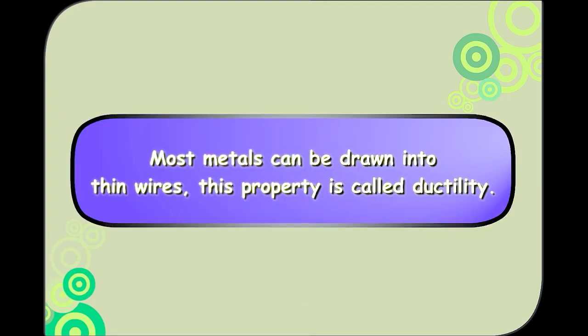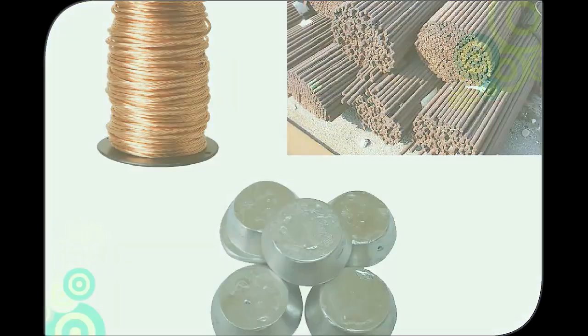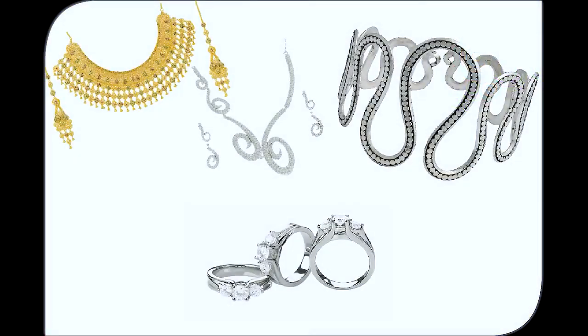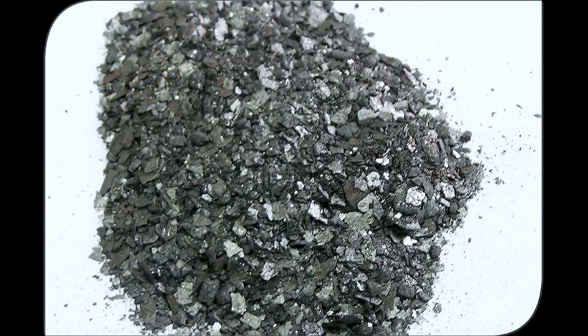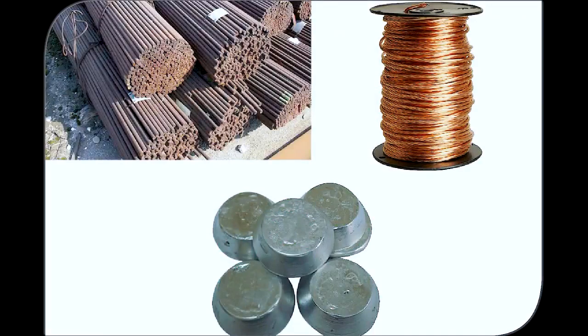Most metals can be drawn into thin wires. This property is called ductility. Copper, iron and aluminium are drawn very easily into wires. Non-metals are not ductile. They break when stretched. Metals show luster or shine when polished. That makes them good reflectors of light. Non-metals cannot be polished and have a dull appearance. Iodine and graphite are two non-metals that show some luster.